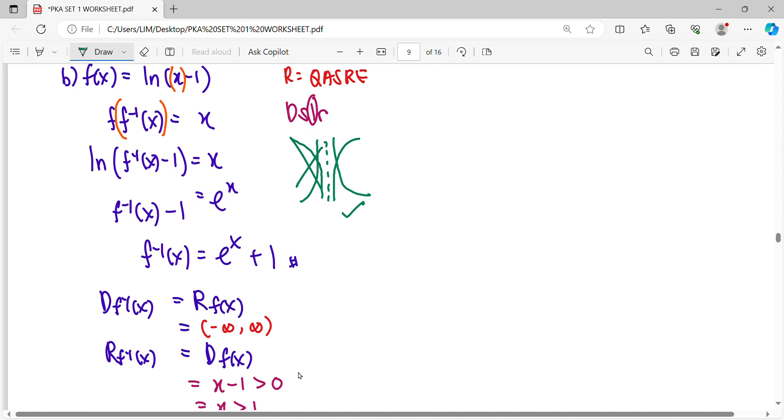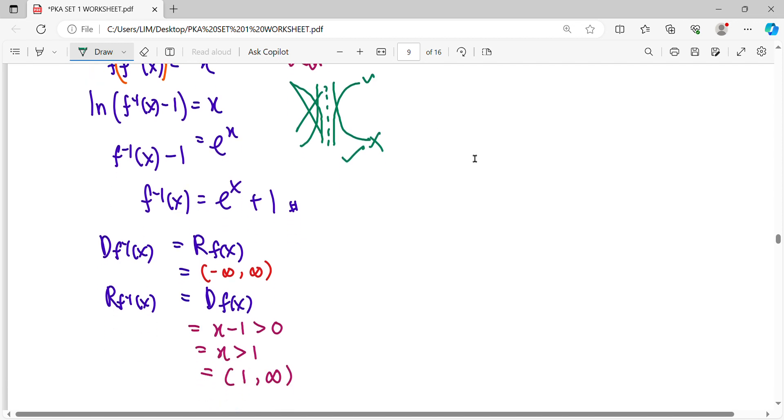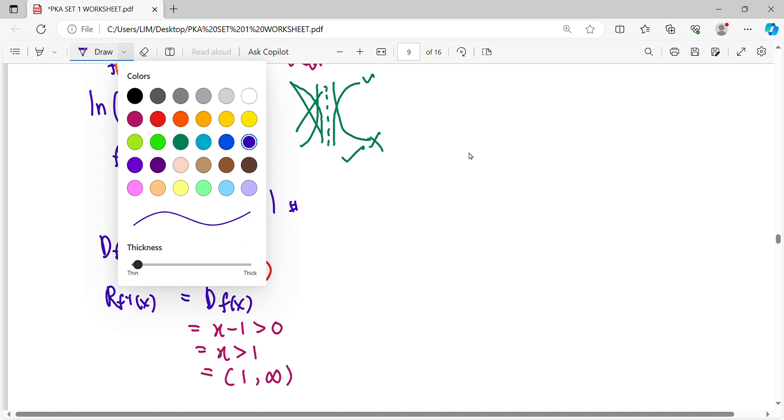Okay, so the shape, terbalik or not. Then you see the log here. Is it multiplied with negative? No. So it will look like normal. So it will not terbalik. If you multiply with negative something, it will be terbalik. Alright, so after we identify the shape, we can start drawing.